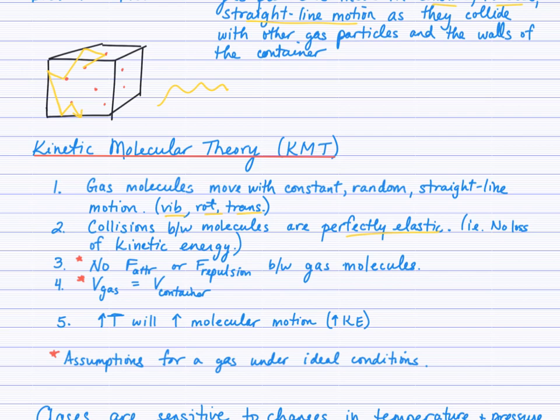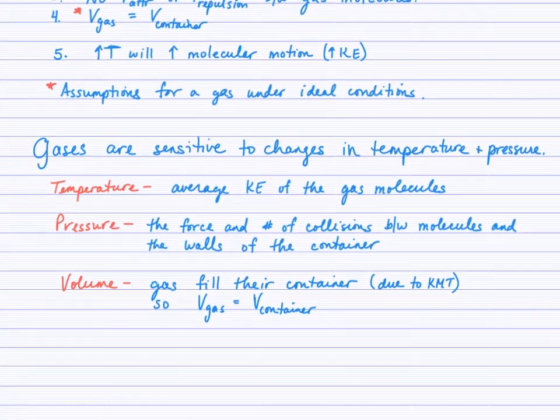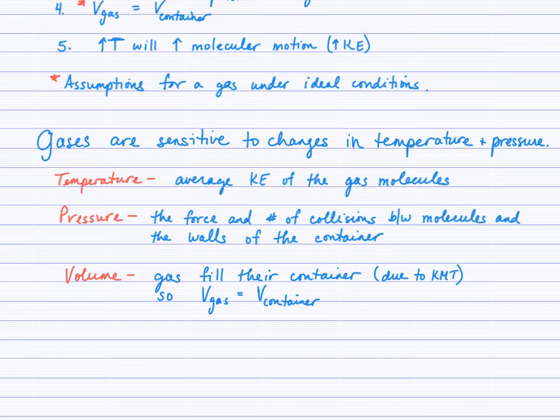Okay, I make this point here that three and four are assumptions made for a gas under ideal conditions. So we'll revisit that when we talk about ideal gases. Okay, so last point is that gases are sensitive to changes in temperature and pressure. And you may recall this from our study of solubility. Gas solutes are more soluble at lower temperatures and higher pressures. Whereas solid solutes really only temperature affected them. Pressure didn't. So three quick definitions here.